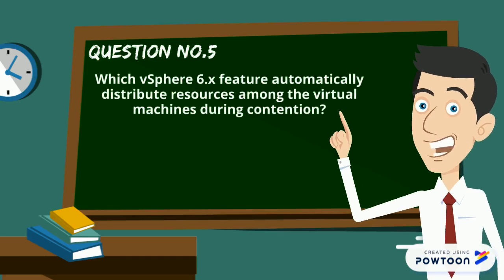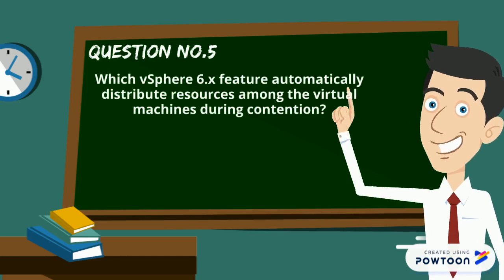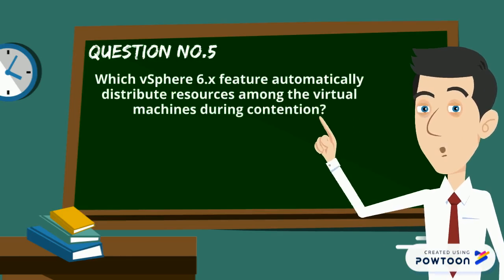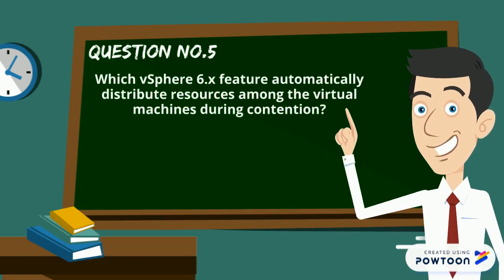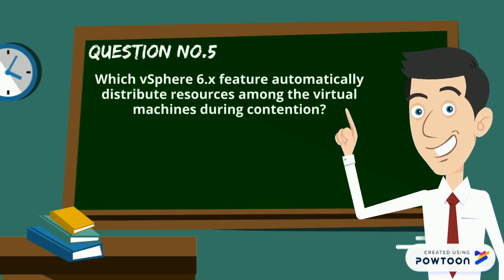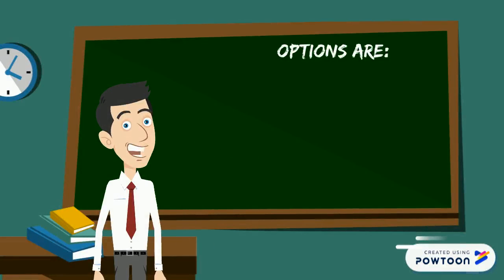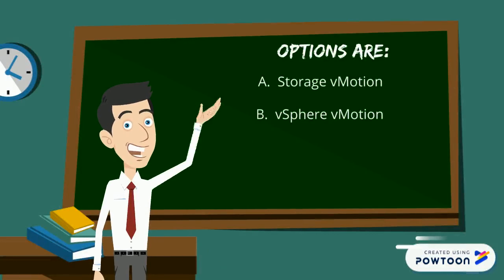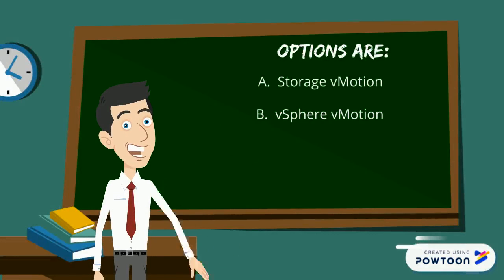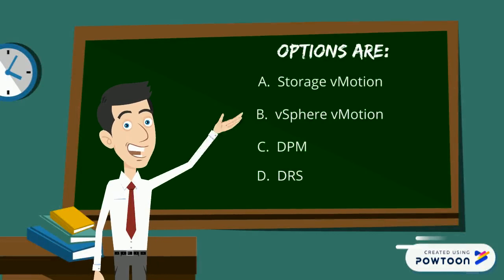Which vSphere 6.x feature automatically distributes resources among the virtual machines during contention? Your options are Storage vMotion, vSphere vMotion, DPM, and DRS.